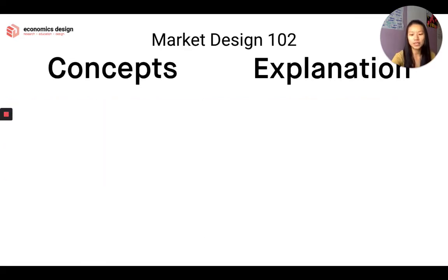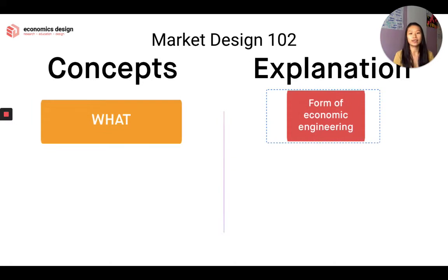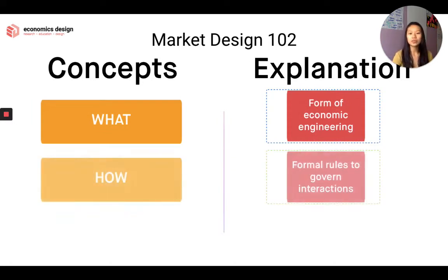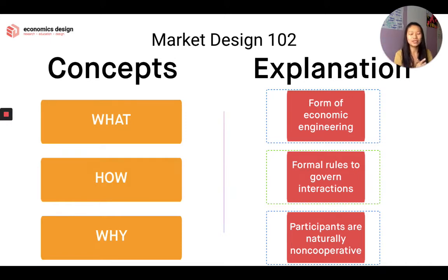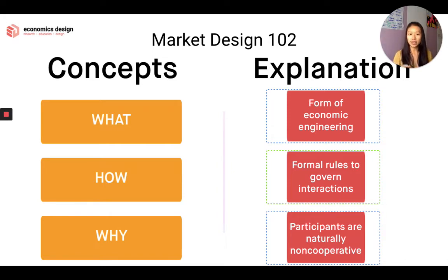So that was 101. Let's go a bit deeper and understand market design from a different perspective. First, it's a form of economic engineering — we design these markets through formal rules to govern interactions. Why do we need market design? Simply because participants are naturally non-cooperative. Unless there's an incentive for people to cooperate, there is no reason for them to cooperate, because people are intrinsically selfish. With rules to govern interactions, we can help encourage cooperative behaviors.